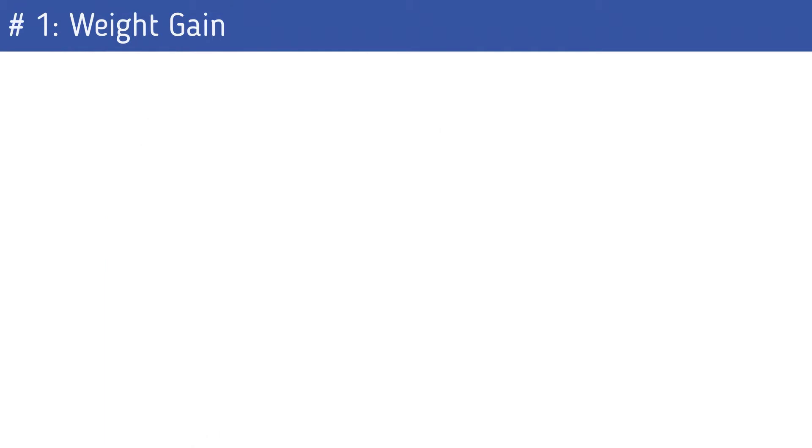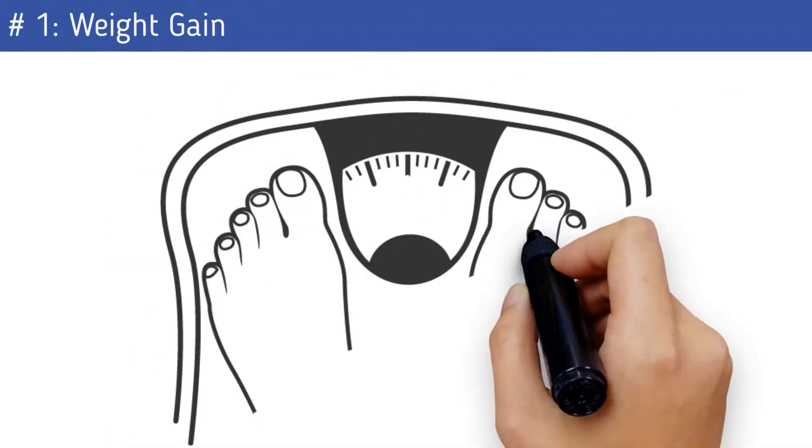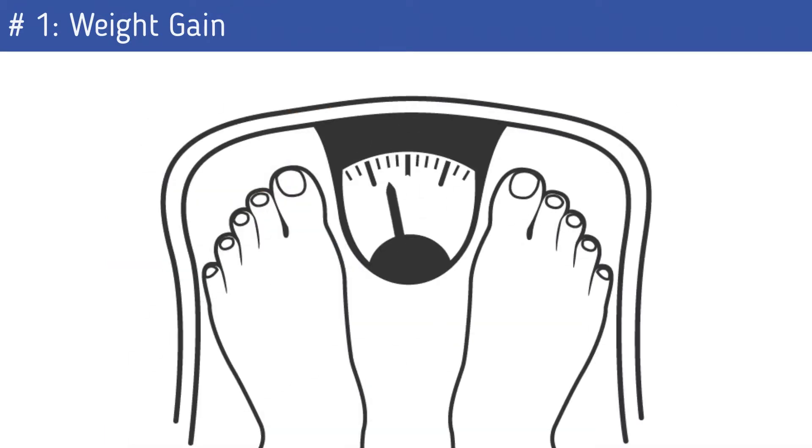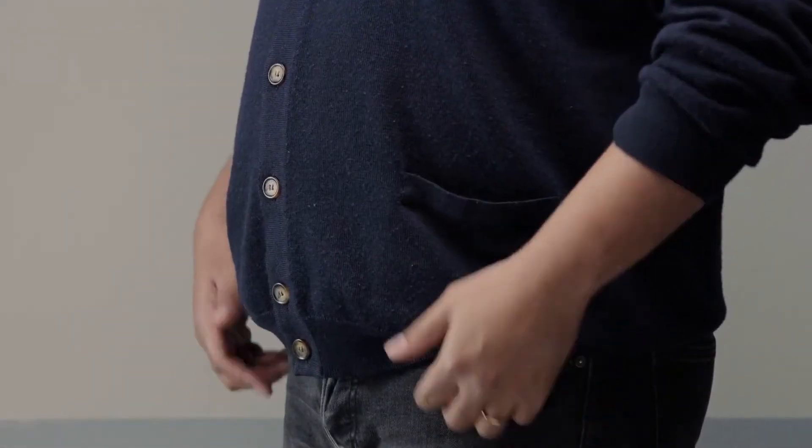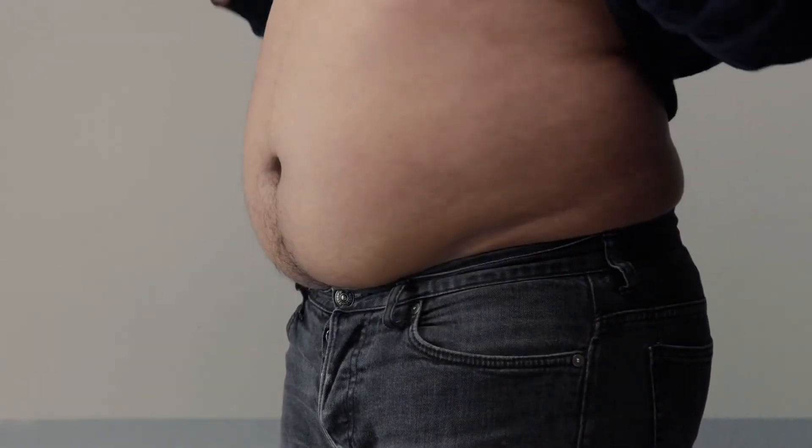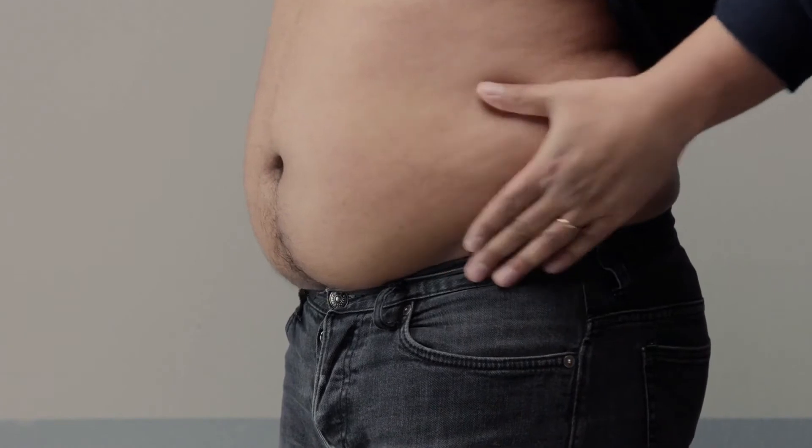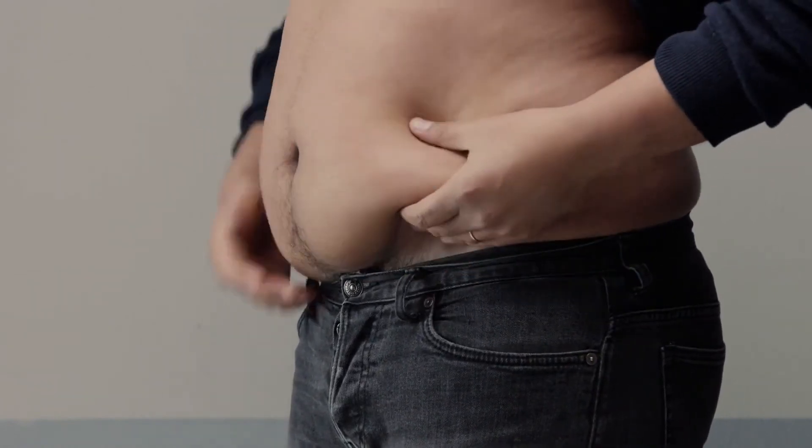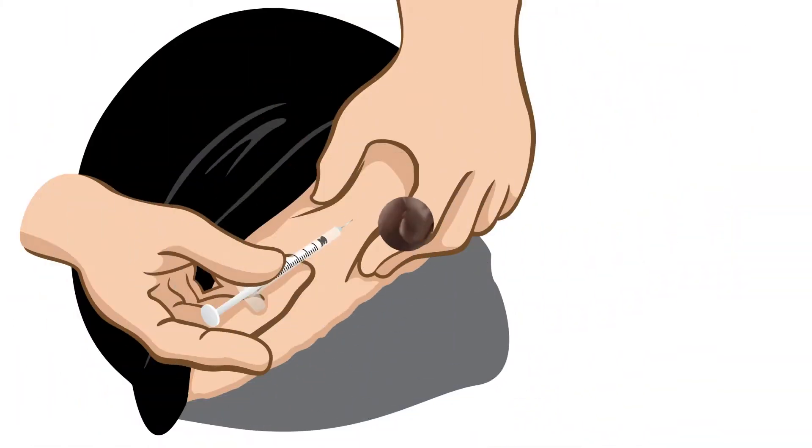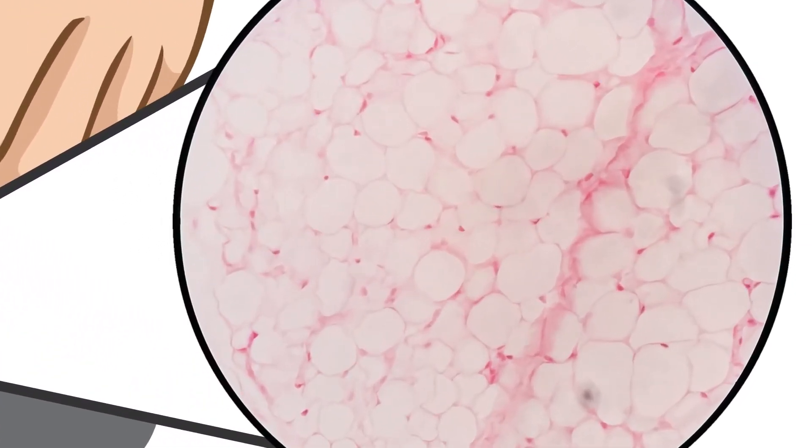Number one: weight gain. You're probably not expecting this, but insulin can increase your weight by around 15 kilograms, that's 35 pounds. Mind you, chances are you were already slightly overweight. Why? Because, as I've already mentioned, insulin is the storage hormone, and that's where the problem lies. As soon as you start injecting more insulin, the body stores more nutrients in the form of fat.